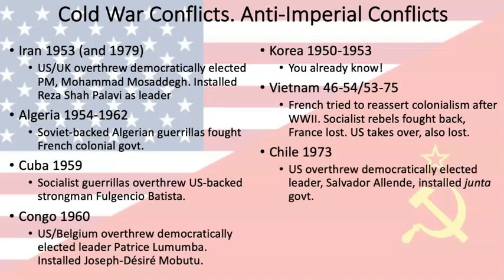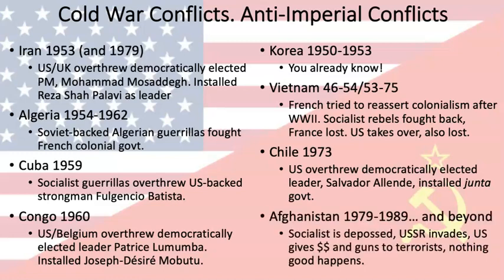Chile in 1973: democratically elected Salvador Allende — a Marxist — is overthrown and a military government is put in place. In Afghanistan, a socialist is deposed, a more pro-Moscow leader is installed, and the United States funnels money to the Mujahideen. They beat the Soviets, then evolve into the Taliban — consequences we are still living with.